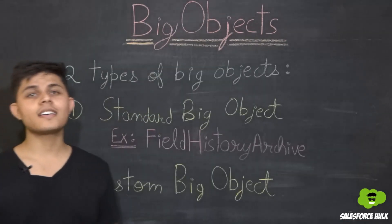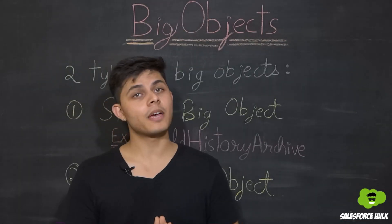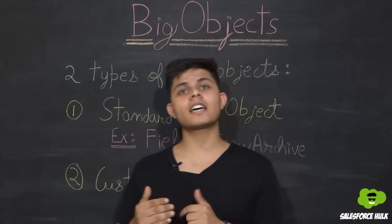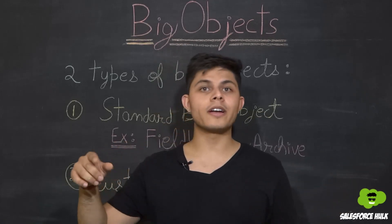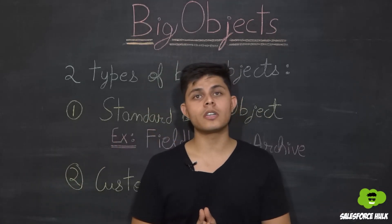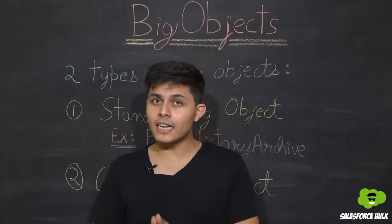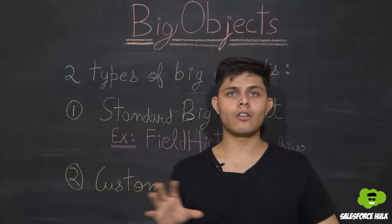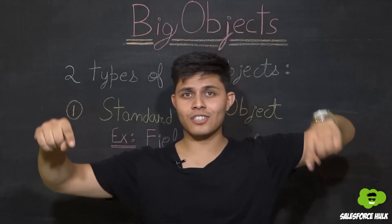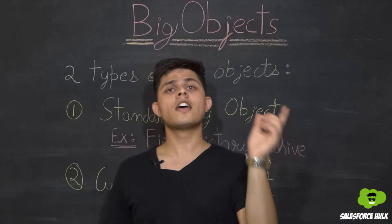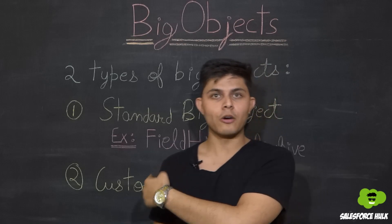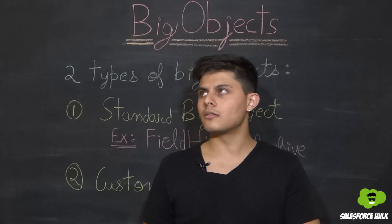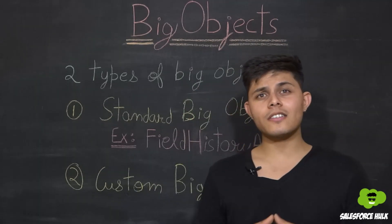We can create a custom big object using Metadata API only — there is no other way. We cannot create a custom big object like a custom object using point-and-click; we have to use Metadata API only. If you want to try creating a custom big object, there's a link in the description — an implementation guide for big objects showing how to implement one in your org.